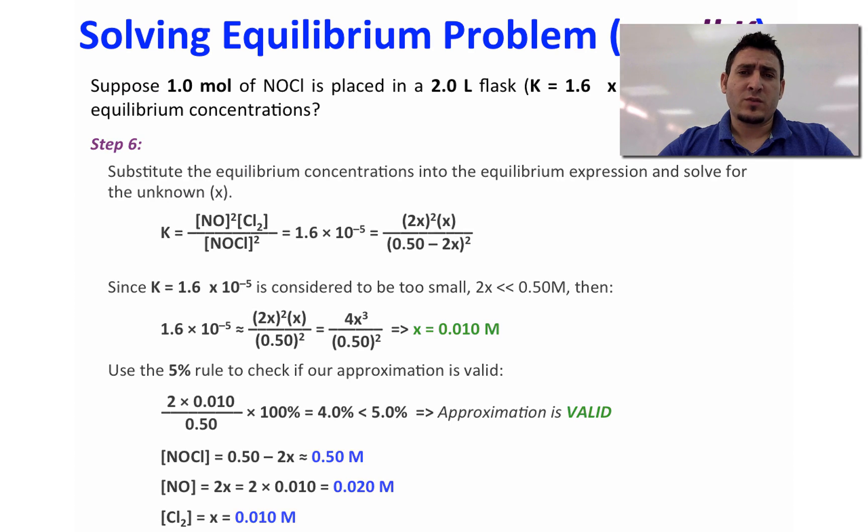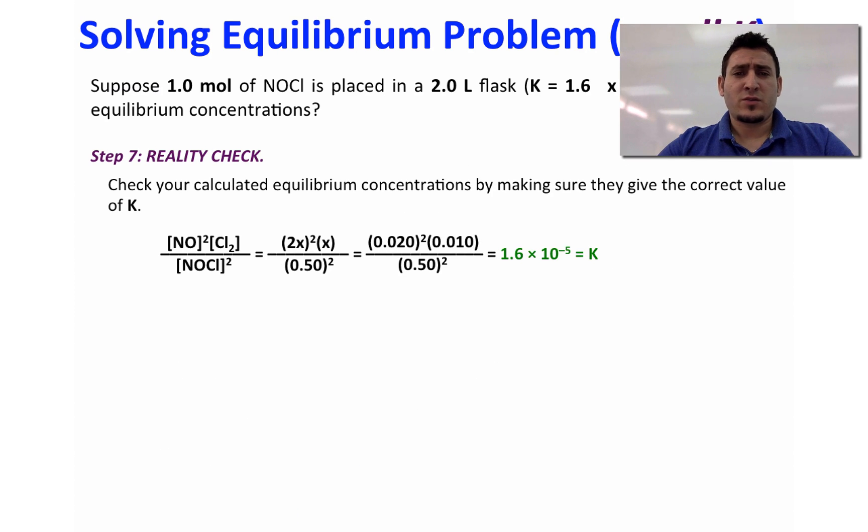Now at the end we can do a reality check just to make sure that using these concentrations we will get the same value of K, and therefore we can see that we get 1.6 times 10 to the power minus 5, which is equal to K. So our calculations are correct.